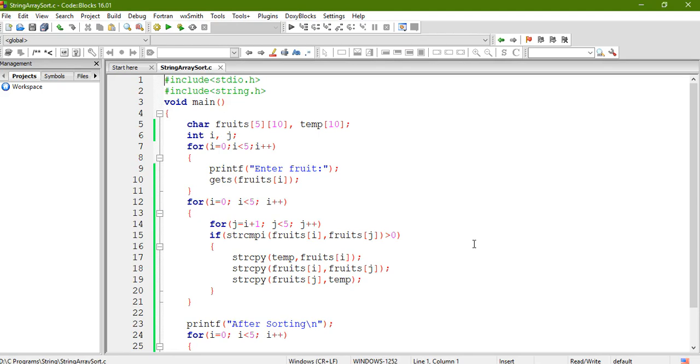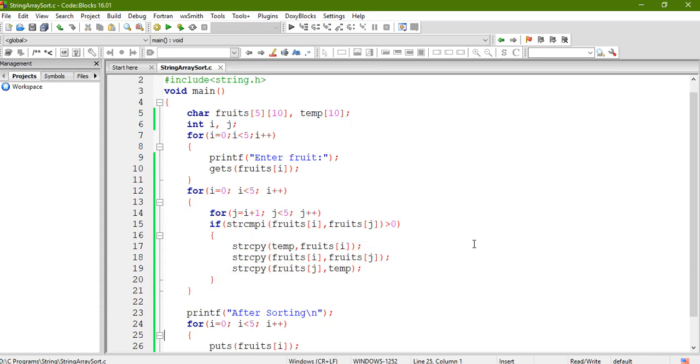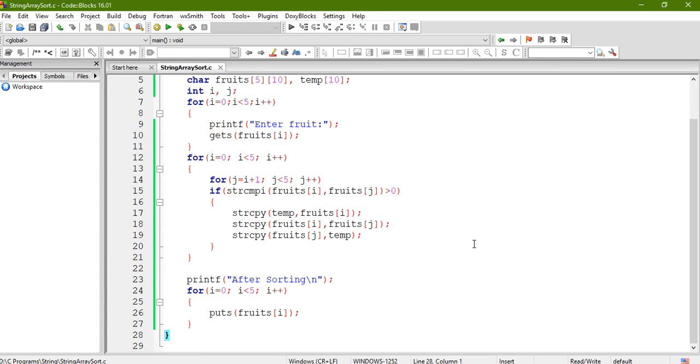So here I included the required header files. Just look at the variables required. Then this first for loop is to input a string for the array. Then this nested for loop is for sorting purposes, the logic I just explained you. And then after sorting, the content of the same array is printed, just to view the effect of sorting.